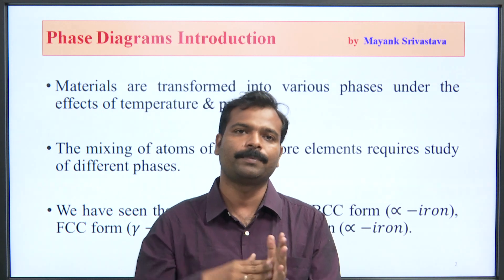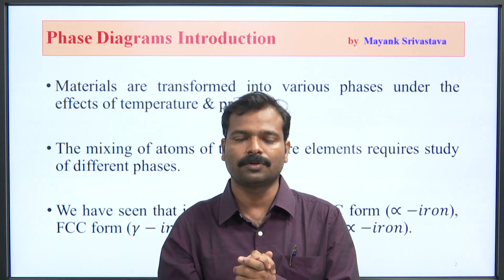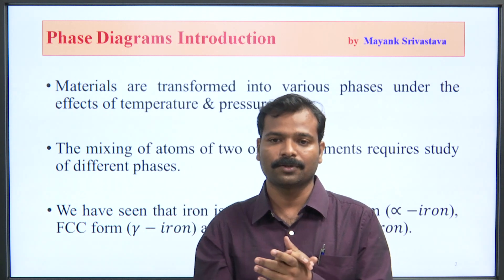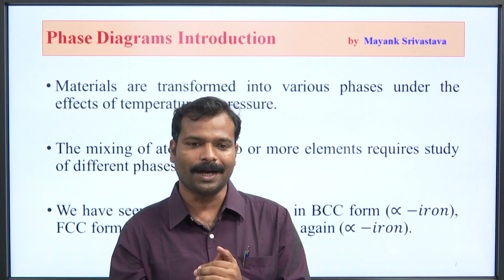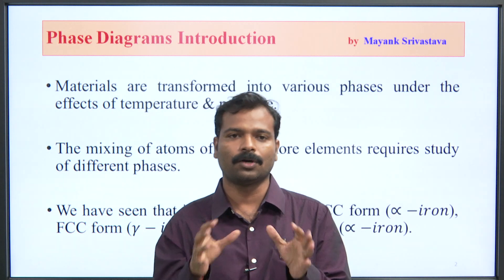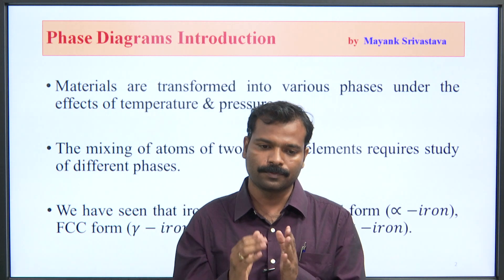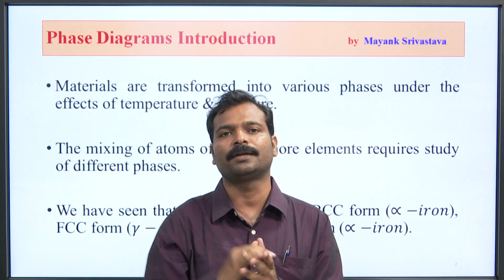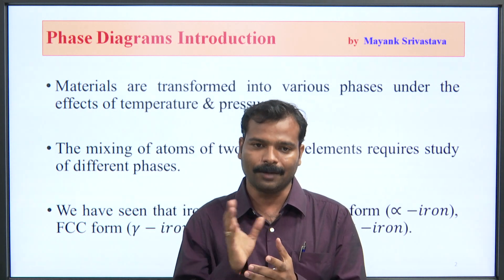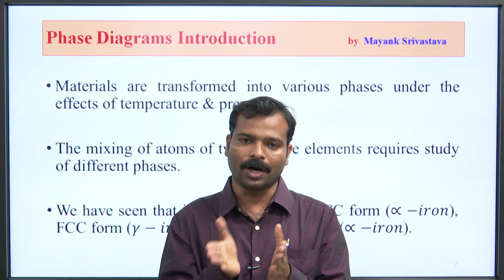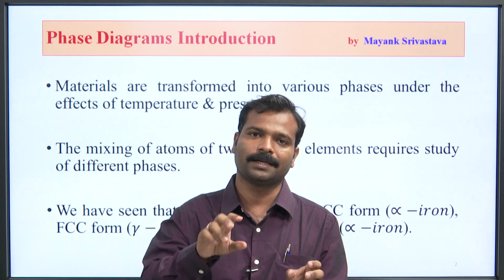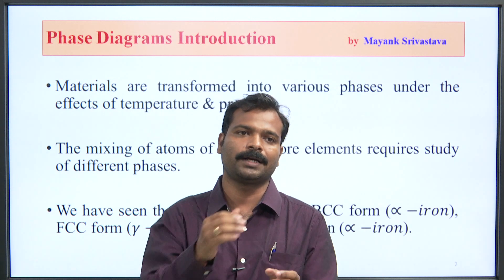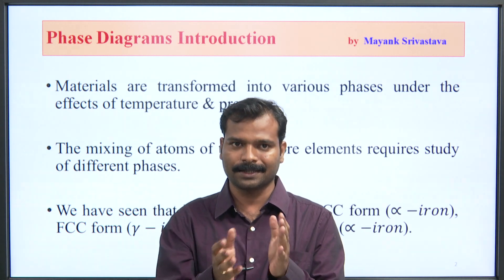But if you use two components, then you need to know the two components' metal qualities. When you know all these things, then you can read the phase diagram properly. So the mixing of two atoms or more elements requires study of different phases. You need to know the iron, the ore form. If you look at the alloy form, then you need to know the steel formation.